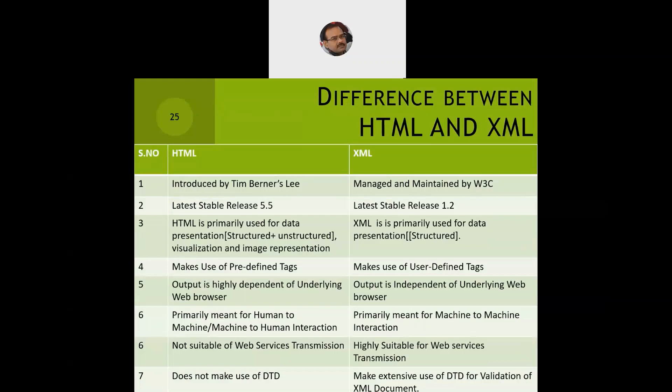Looking at more differences: HTML was introduced by Tim Berners-Lee, and both HTML and XML are managed and maintained by W3C, along with JavaScript. The stable release for HTML is version 5, whereas for XML it is 1.2, though 1.1 is still more popular. HTML is primarily used for data presentation — both structured and unstructured data — with focus on visualization and image representation.